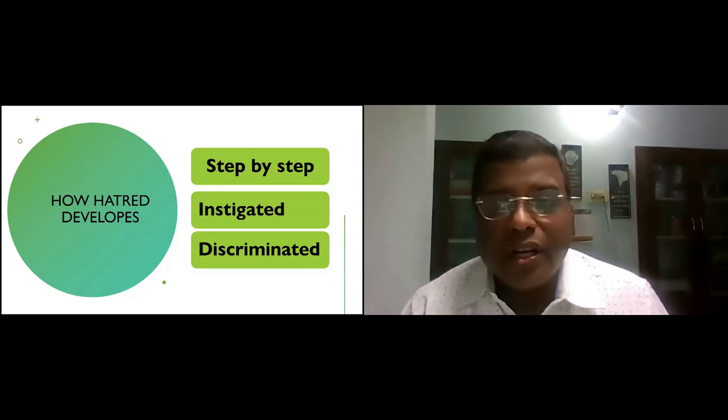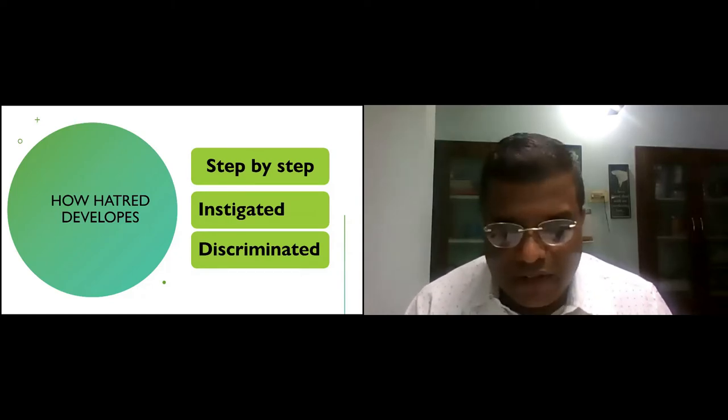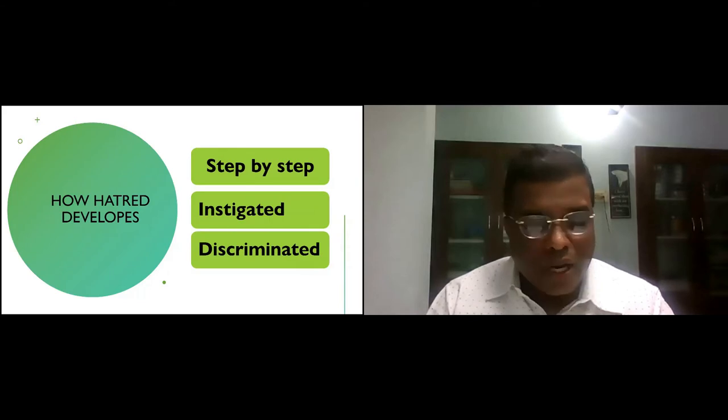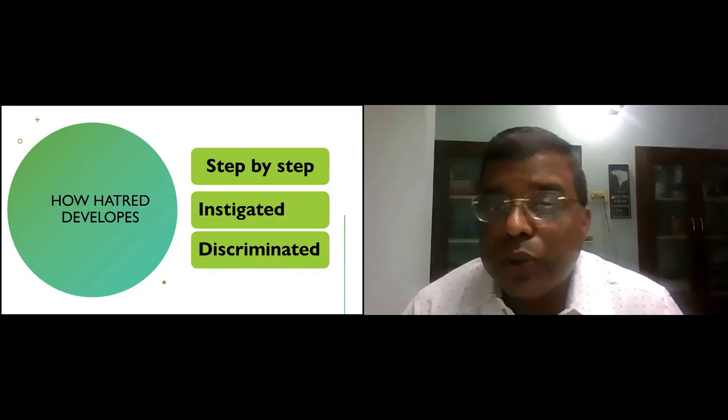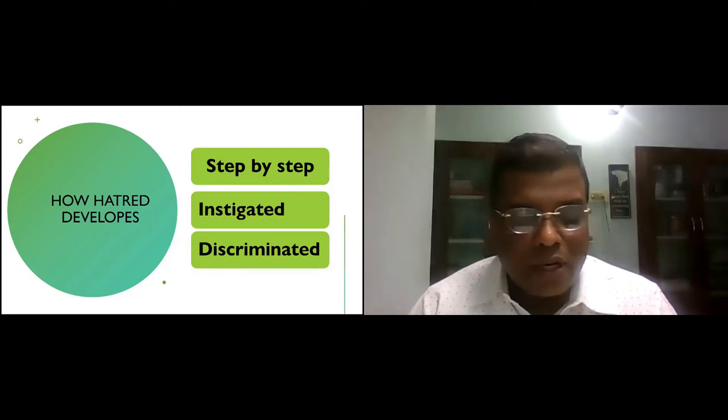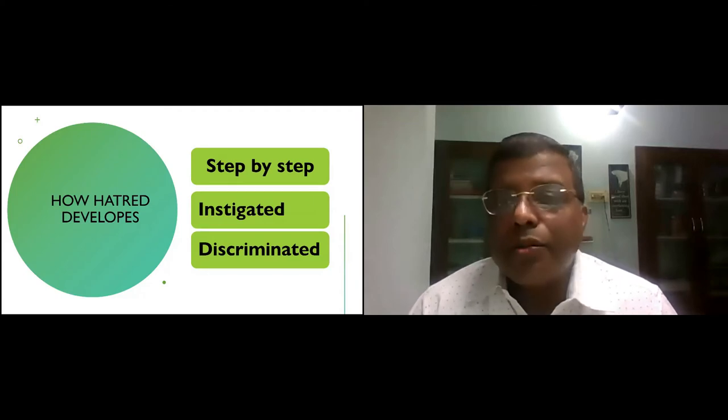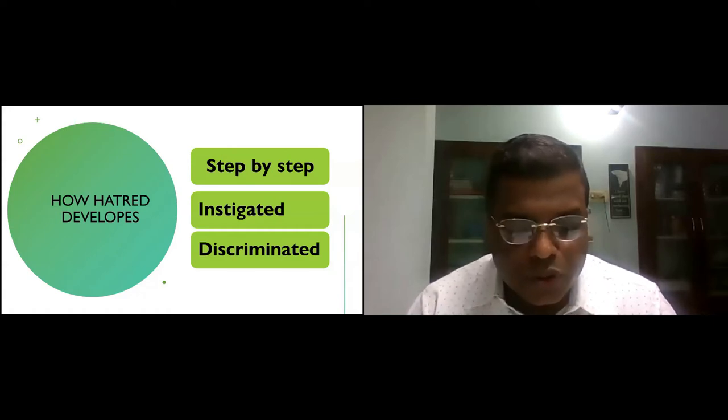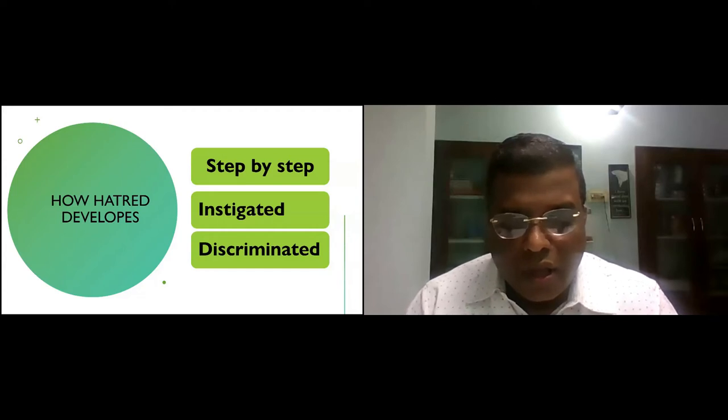How hatred develops. It does not develop just overnight. It's step by step. It develops step by step. It doesn't develop overnight. Hatred develops step by step when a person does harm to another person. For example, if a partner hits the other partner or verbally abuses or constantly nags at the person, or is demanding unreasonably from a person or a member of groups. And this feeling of hate develops.